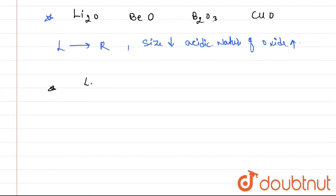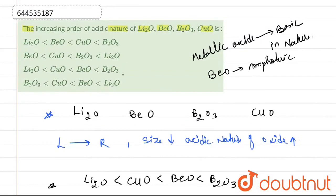The correct sequence would be Li2O, it should be less than that of CuO, then BeO, and then we have B2O3, which is non-metal and most acidic in nature.